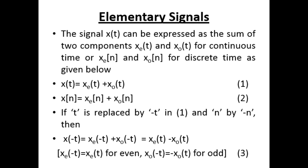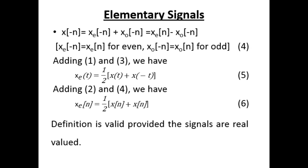Any signal x(t) can be expressed as the sum of an even component xₑ(t) and an odd component x₀(t). Replacing t by −t: x(−t) = xₑ(−t) + x₀(−t) = xₑ(t) − x₀(t). For even signals xₑ(−t) = xₑ(t), and for odd signals x₀(−t) = −x₀(t). Similarly for discrete time: x(−n) = xₑ(n) − x₀(n). Adding equations gives xₑ(t) = ½[x(t) + x(−t)] and xₑ(n) = ½[x(n) + x(−n)].